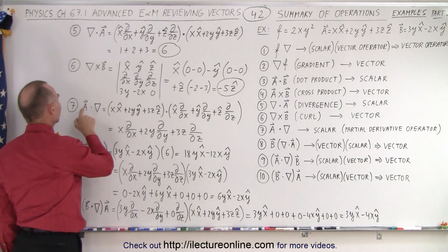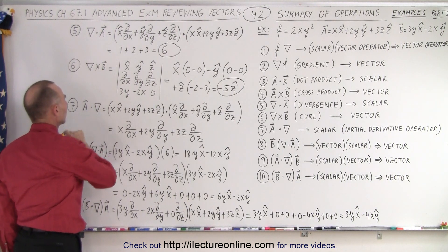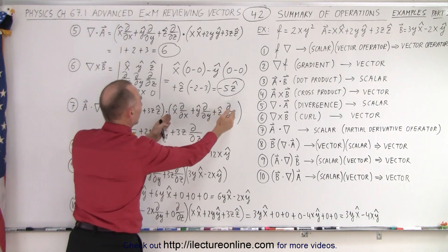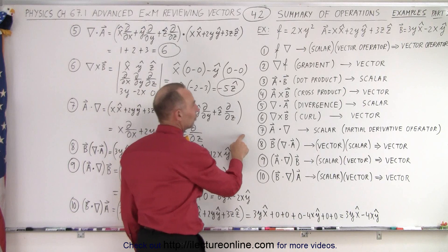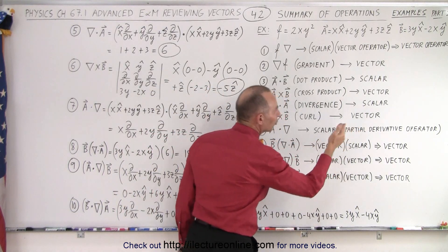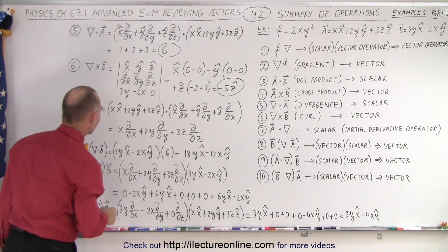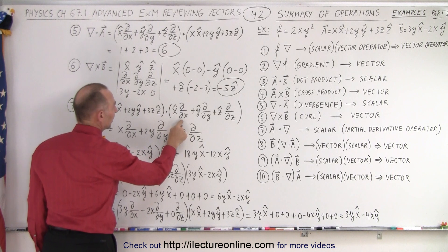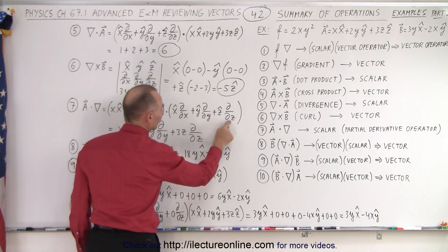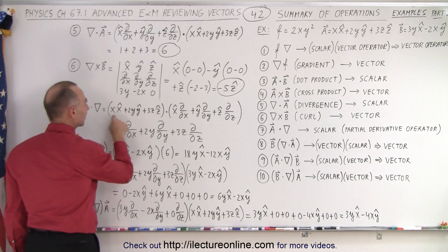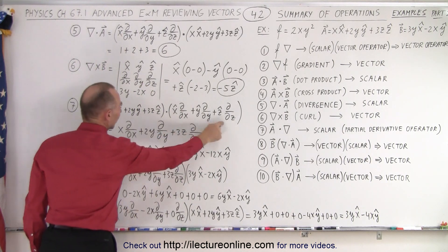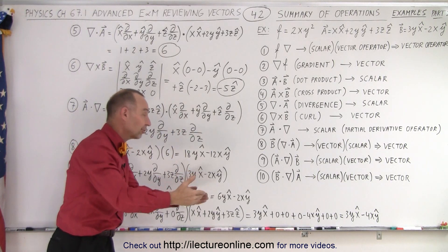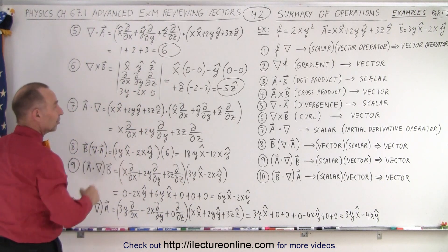Now we have what we call vector A multiplied via the dot product with the del operator. Here is vector A from our example, and here is the del operator. For example 7, we will end up with a scalar quantity — a partial derivative operator — because we're going to multiply the x, y, and z components times the partial derivatives with respect to x, y, and z respectively. So x times this, 2y times this, and 3z times this gives you the result. You still have an operator because now you can operate on another vector or even on a function. It doesn't matter — we end up with a scalar quantity.